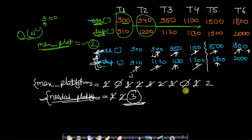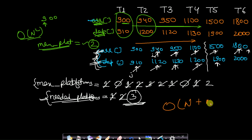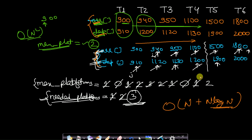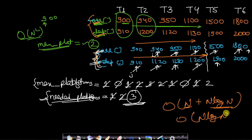The time complexity of this solution: the traversal itself is O(n). Overall, the solution is O(n + n log n) because we sort both the arrival and departure arrays, which takes O(n log n). If the arrays are given pre-sorted, it takes just O(n). Therefore, the overall time complexity is O(n log n).